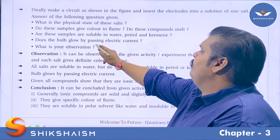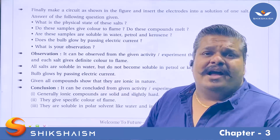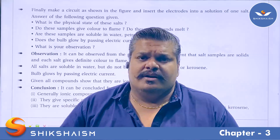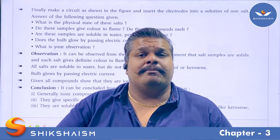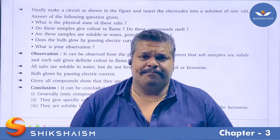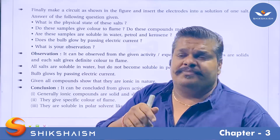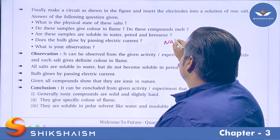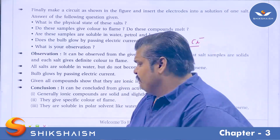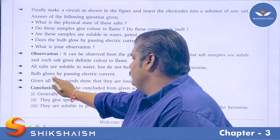Does the bulb glow when electric current is passed? Yes. Ionic compounds in their molten state or in their aqueous solution state are good conductors of electricity. However, in their solid crystalline form they are bad conductors of electricity. In molten or aqueous form, Na⁺ and Cl⁻ ions separate, and these free ions are responsible for the conduction of electricity, which is why the bulb glows.